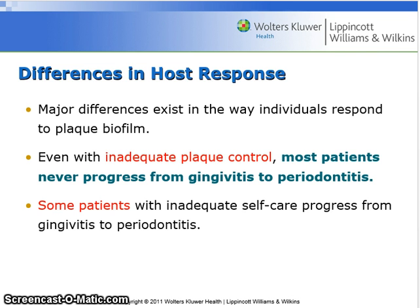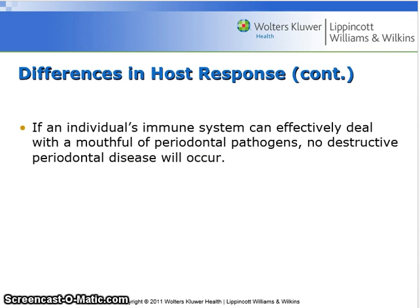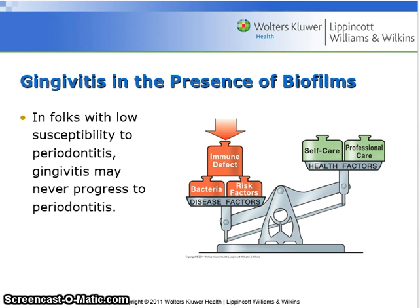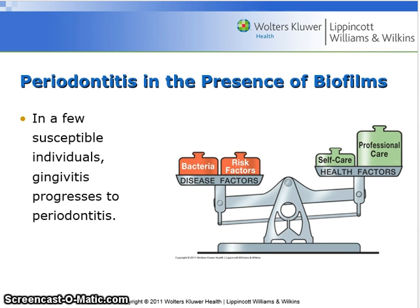Some patients with inadequate self-care progress from gingivitis to periodontitis. If an individual's immune system can effectively deal with a mouthful of periodontal pathogens, no destructive periodontal disease will occur. In folks with low susceptibility to periodontitis, gingivitis may never progress to periodontitis. In a few susceptible individuals, gingivitis progresses to periodontitis.